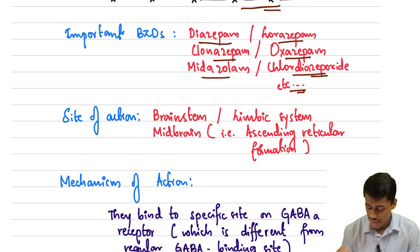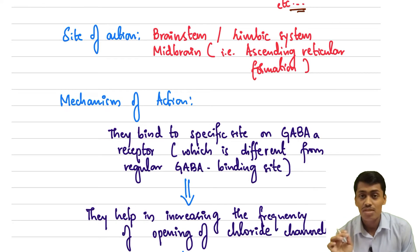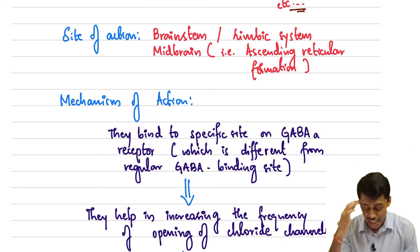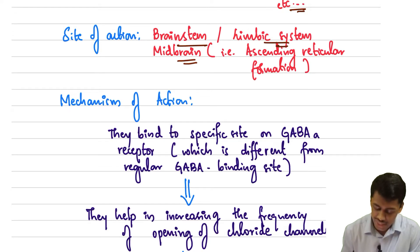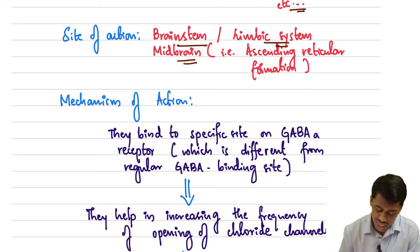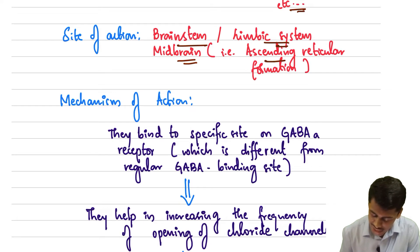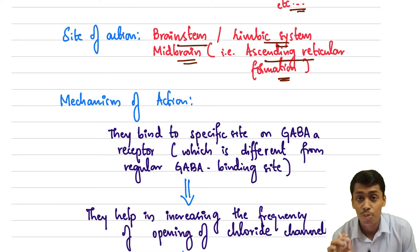What is the site of action of these benzodiazepines — where does it act in our brain? It acts in the brainstem, limbic system, as well as the midbrain, that is the ascending reticular formation.